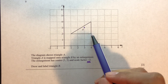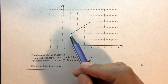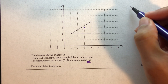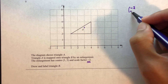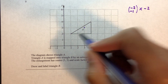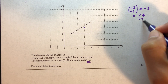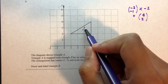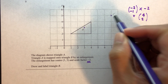Starting with the first point: from the center (3,3), we move 2 to the left and 1 down, giving vector (minus 2, minus 1). Multiplying by scale factor minus 2: (minus 2 times minus 2, minus 1 times minus 2) equals (4, 2). From center (3,3), we move 4 right and 2 up to plot the first image point.